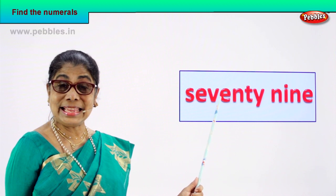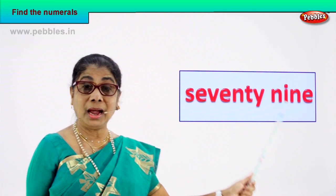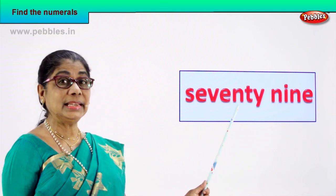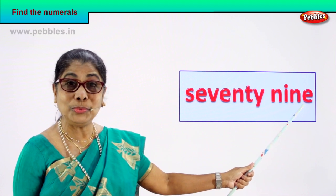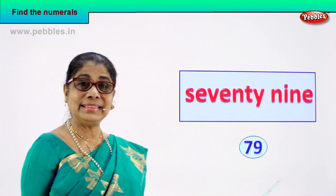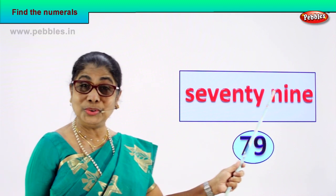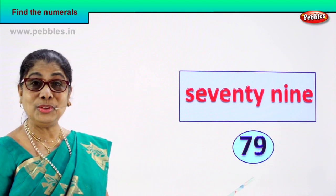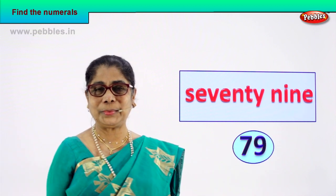Shall we take the next number name? Read it aloud. S-E-V-E-N-T-Y, 70. N-I-N-E, 9. 79. For this number name, how do we find the numeral? 79 — seven and nine, 79. You learn to read the number name and write down the numeral: 7 and 9, 79.